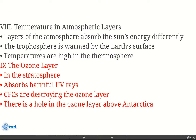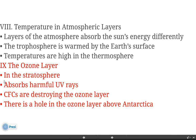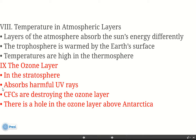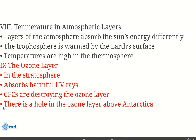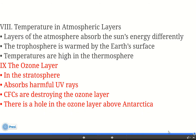For section 9 notes, we have the ozone layer. Where is it located? It's located in the stratosphere. What does it do? It absorbs harmful UV rays — those are ultraviolet rays. What's the problem? CFCs — chlorofluorocarbons — are destroying the ozone layer. There is a hole in the ozone layer above Antarctica. That completes section one.